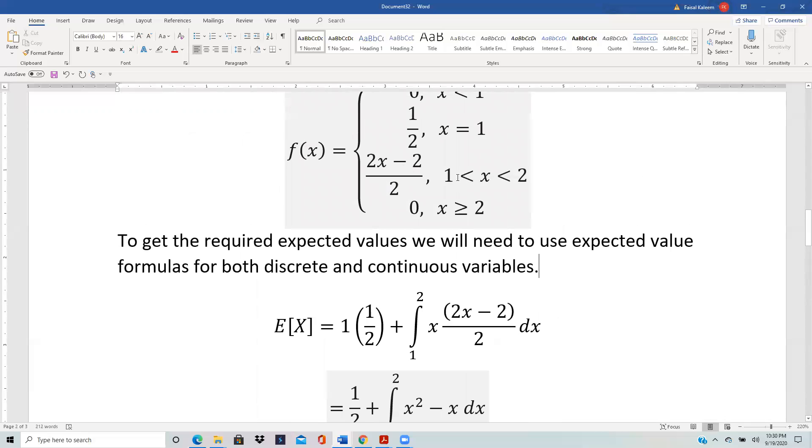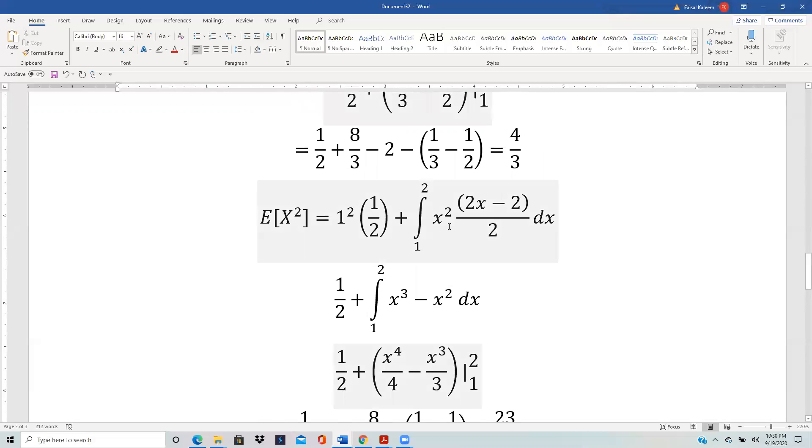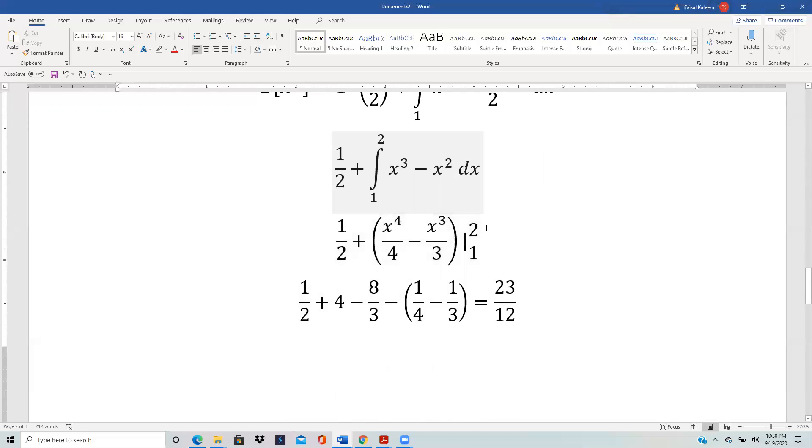That's the f(x) in the 1 to 2. Same thing: the twos cancel out here, multiply the x² through you get x³ - x², and then integrate: x⁴/4 - x³/3 from 1 to 2, and eventually you get 23/12 for E[X²].